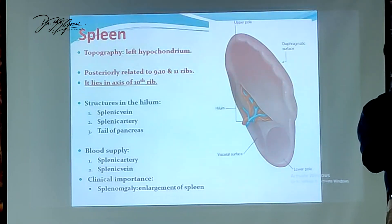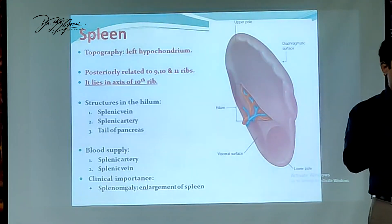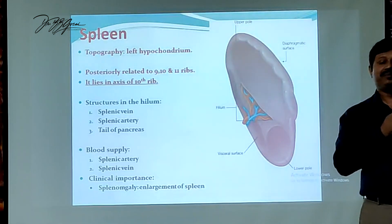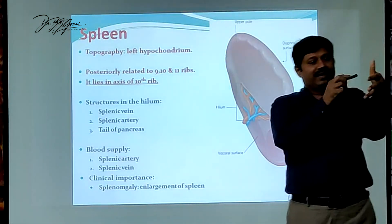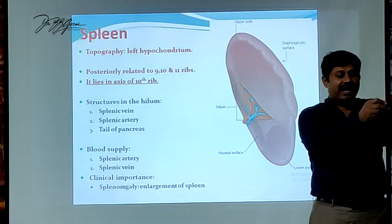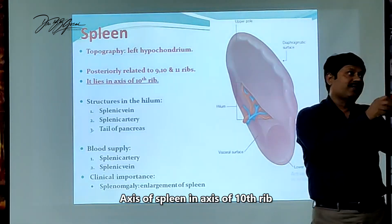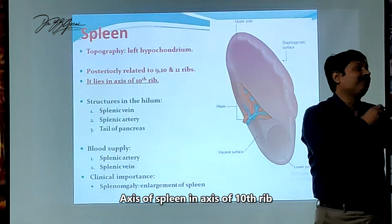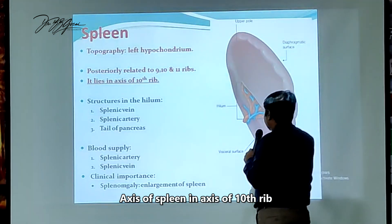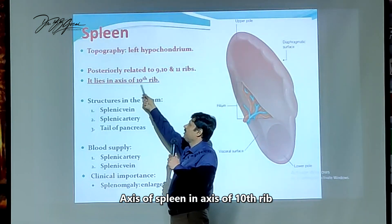So, using your fingers for ribs 9, 10, and 11 — that gives you 3 fingers — the spleen will be located here. The axis of the spleen is in the axis of the 10th rib. So the axis of the spleen aligns with the 10th rib.